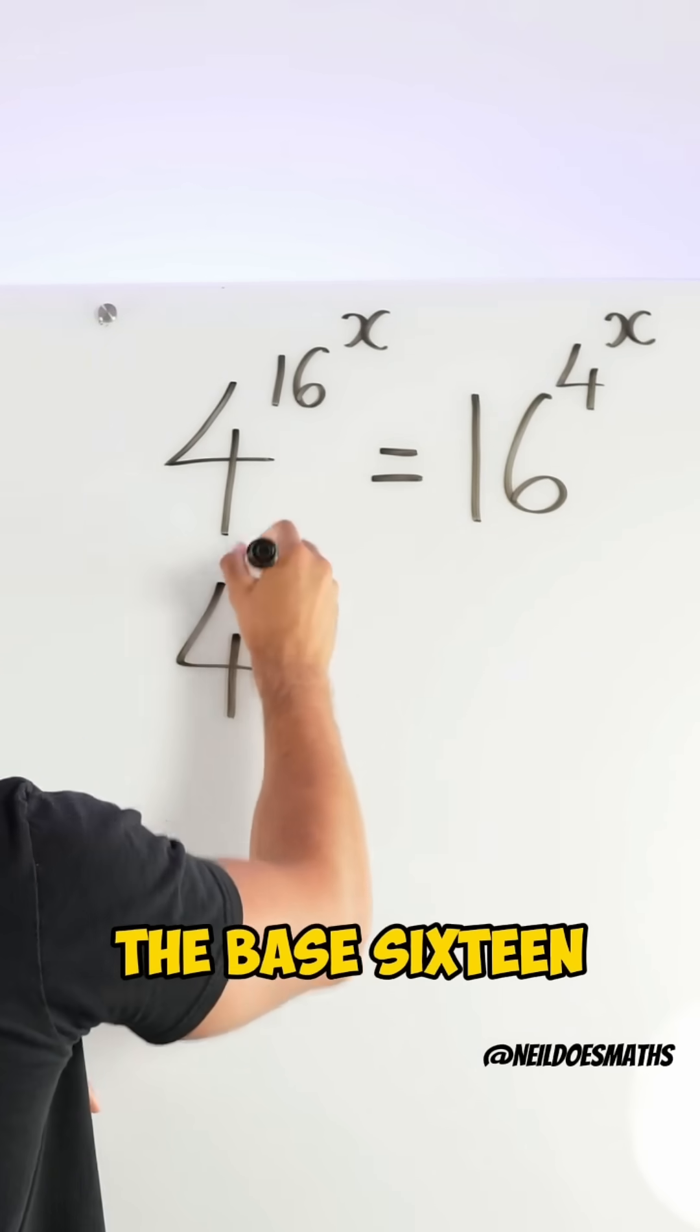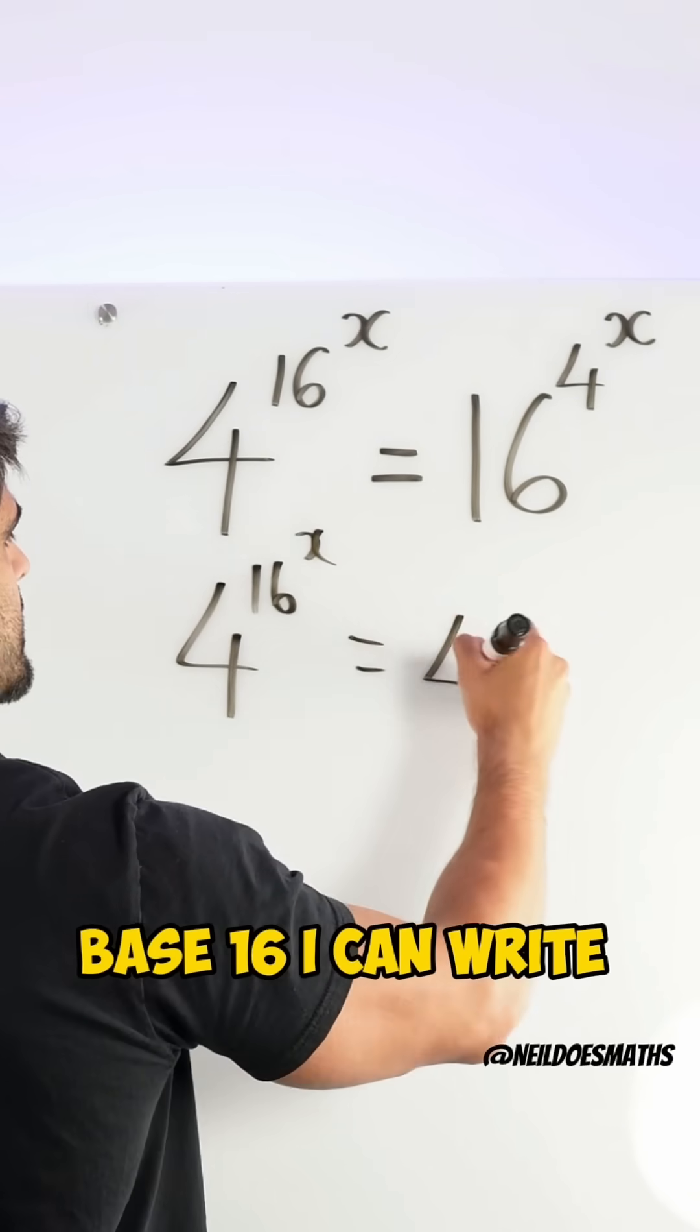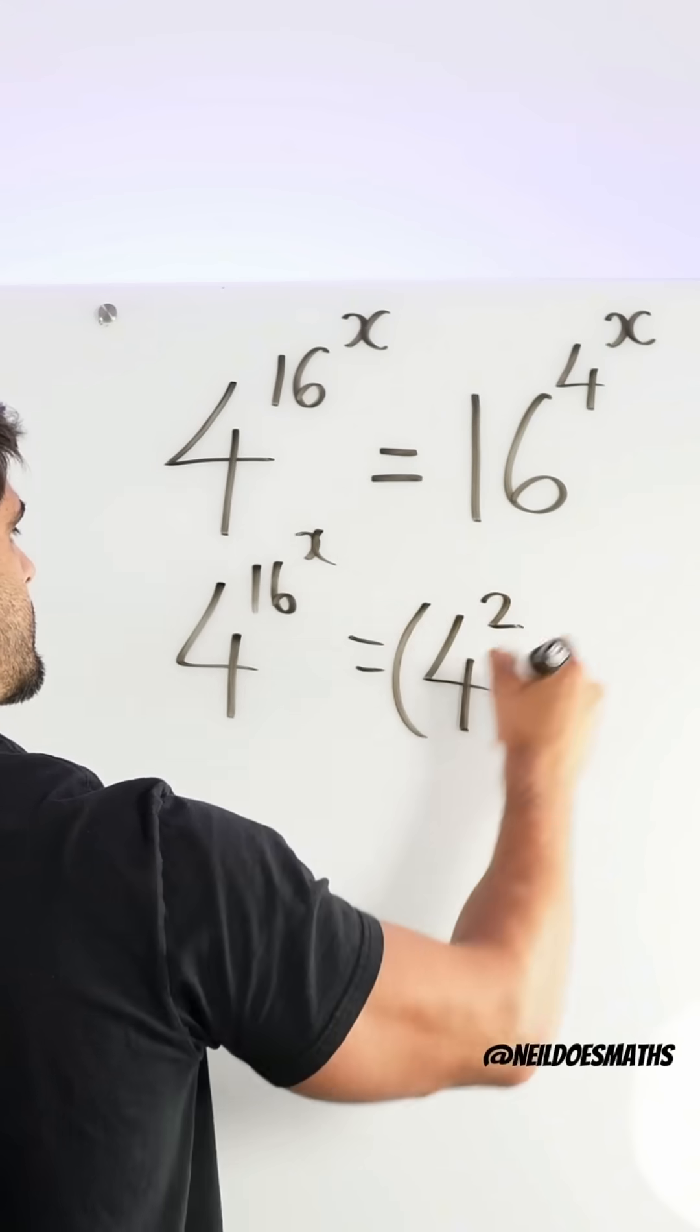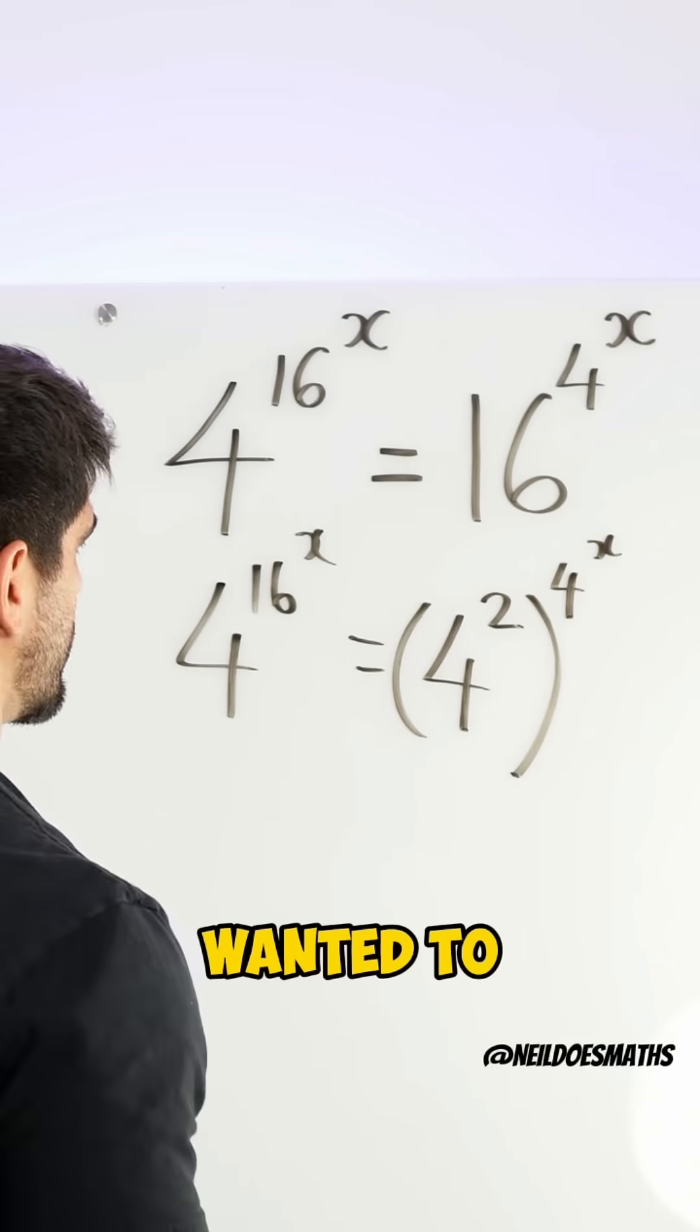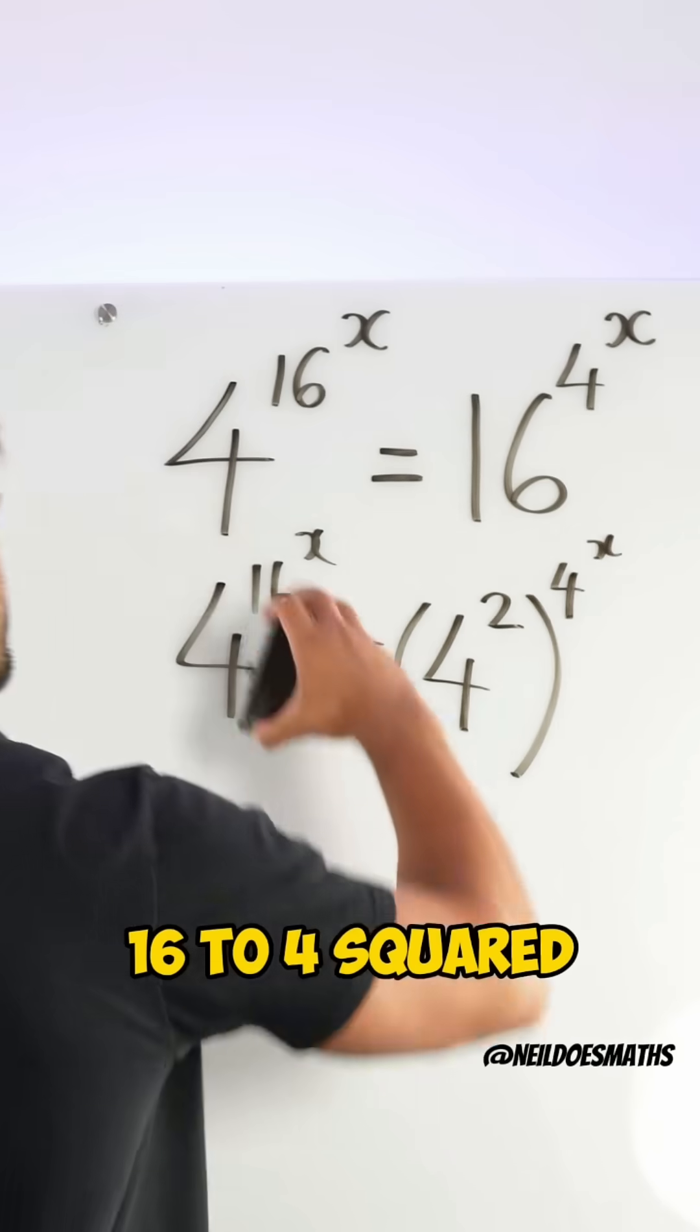I can rewrite the base 16. Base 16, I can write that as 4 squared. Use a bracket to the power of 4 to the power of x. And at the same time, if you guys wanted to, you could change that 16 to 4 squared.